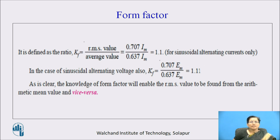So form factor is the ratio of RMS value to the average value. RMS value is 0.707 Im. Average value is given by 0.637 Im. So the form factor is given as 1.11. So that is the constant value and for AC cycle, AC sinusoidal cycle, this form factor is constant.